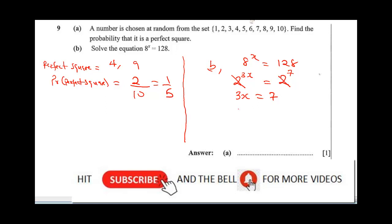We make x the subject of the formula, x would be 7 over 3, which is equal to 2 and 1 over 3. So final answer, it's 2 and 1 over 3.